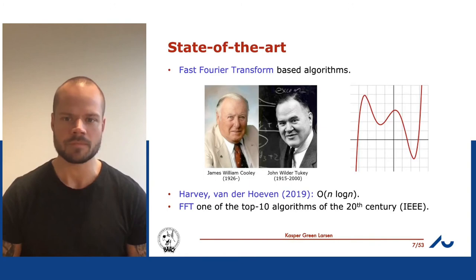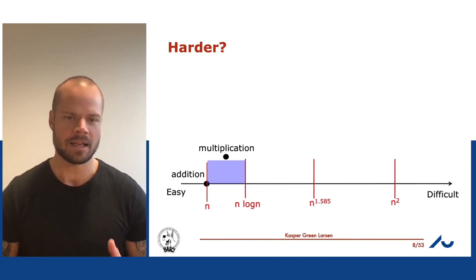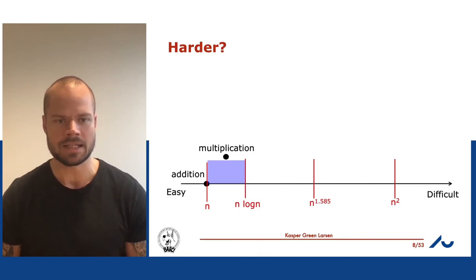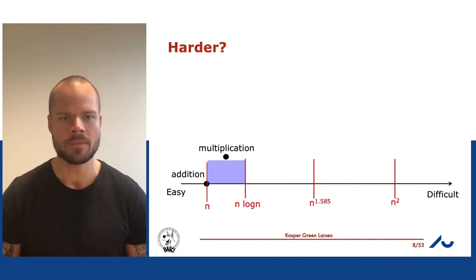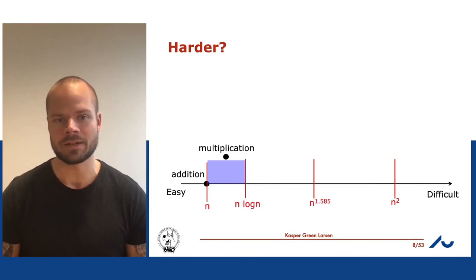So what we know now is that the difficulty of multiplication lies somewhere between linear time and n log n time, but we don't know exactly where. Addition is down at linear time; multiplication is somewhere in this interval. What is the true complexity of multiplication — is it as easy as addition, or somewhere between linear and n log n?